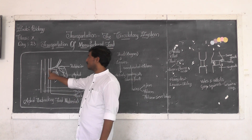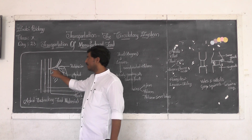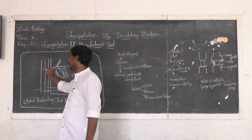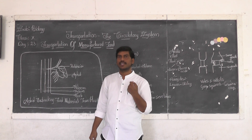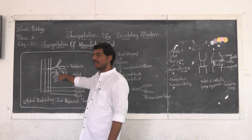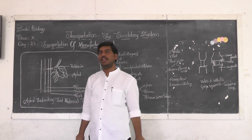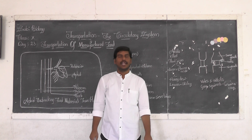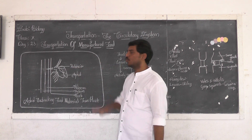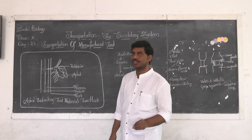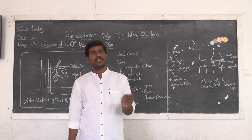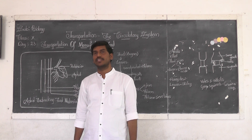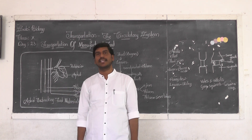Scientists started to understand the role played by phloem sieve tubes through the aphid experiment. The proboscis of the aphid starts piercing into the bark and reaches into the phloem. The proboscis reaches into the phloem, and from the phloem it takes what is called the plant juices. When the aphid is killed such that the proboscis is still inside, they observed some amount of plant juice oozing out. They collected and studied the chemical nature of these juices — which contained sugars and amino acids.